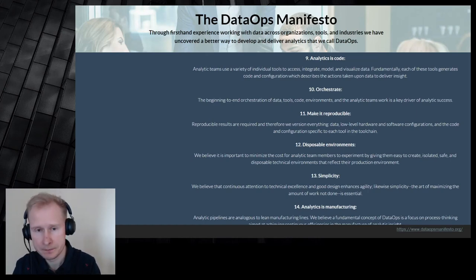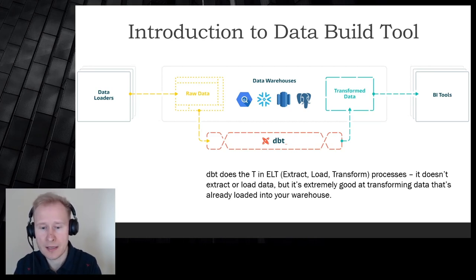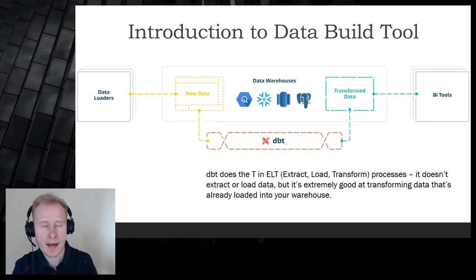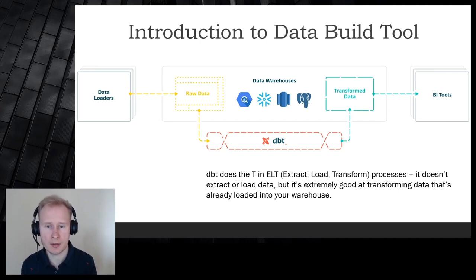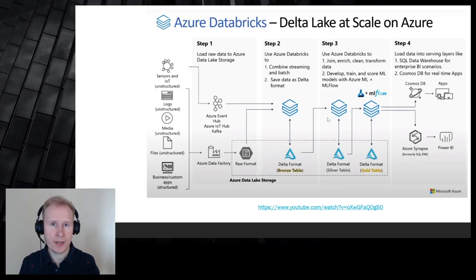So what is dbt? dbt presents itself as the T in the ELT process — you have Extract, Load, and Transform. dbt specializes just in the T, the transformation process. As you see in the diagram, data has to already be in raw form; then dbt transforms it. It has different connectors — the default connectors target BigQuery, Snowflake, and Redshift — but as you'll see, more connectors are available and on the roadmap.